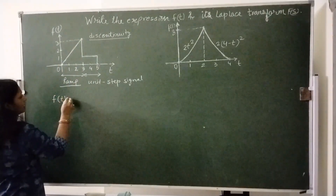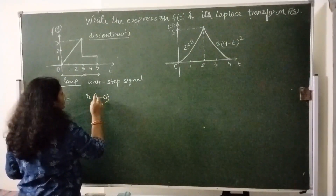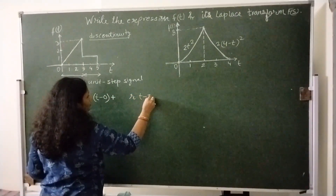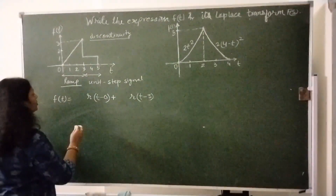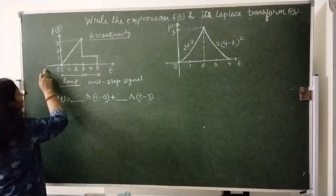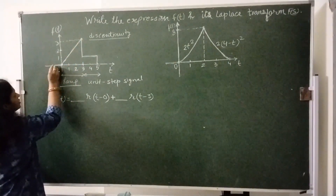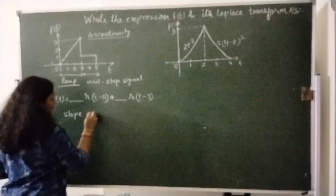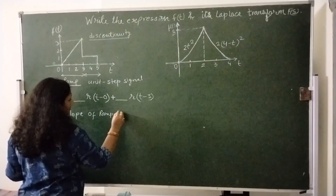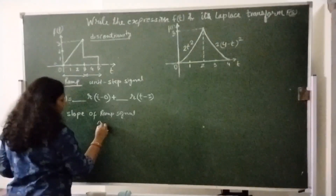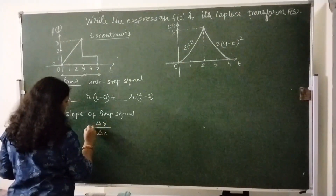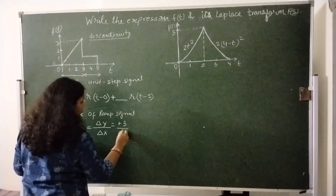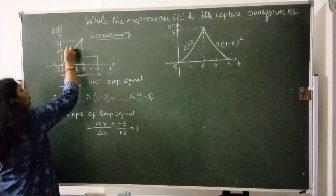We will write the expression at these points for ramp: R at t equals 0 and ramp at t equals 3, that is R(t minus 3) and R(t minus 0). Now we find the value of slope change at these two points. Here the slope is 0. The slope of the ramp signal is Δy/Δx. The difference in y for this ramp is 3 and difference in x is again 3, so it equals 1. This is the slope for this ramp.